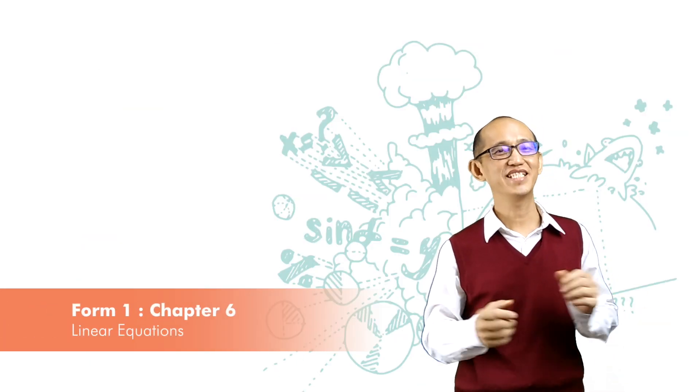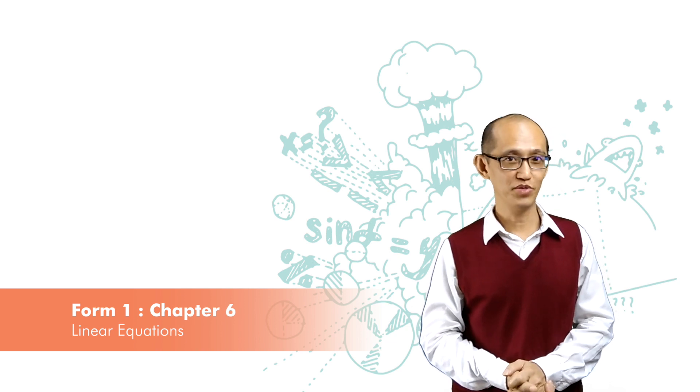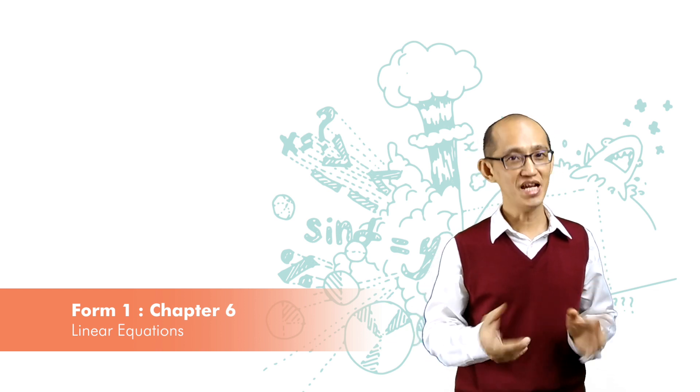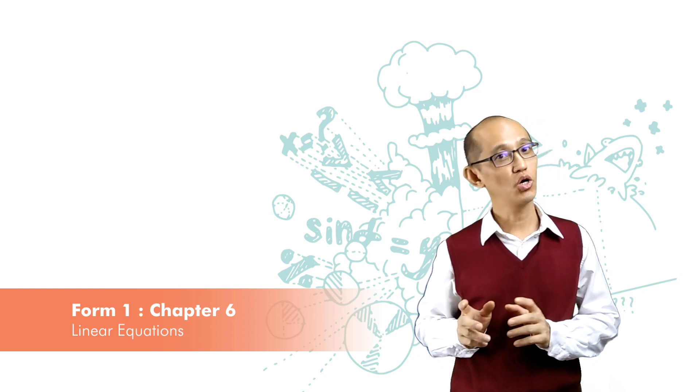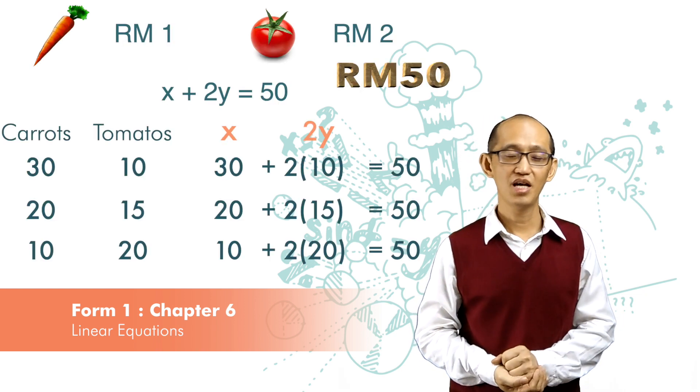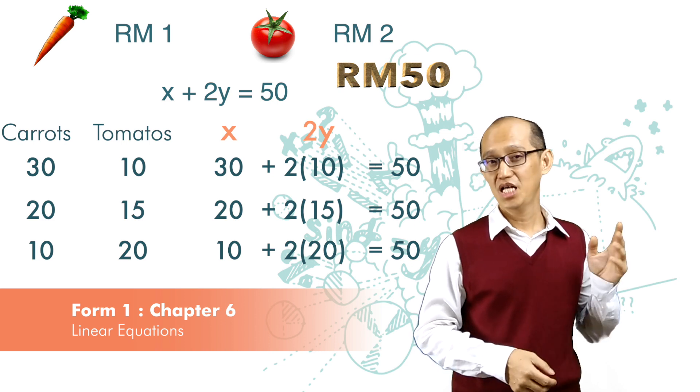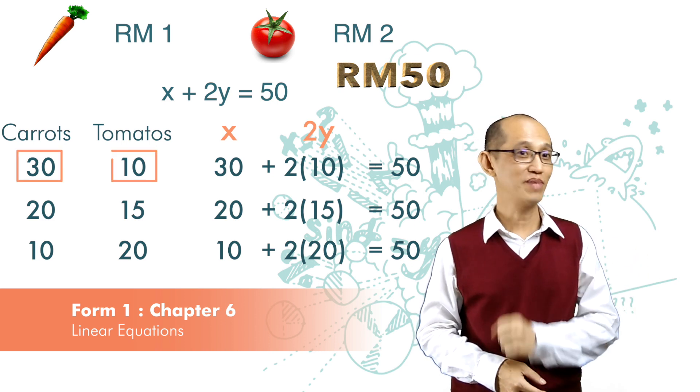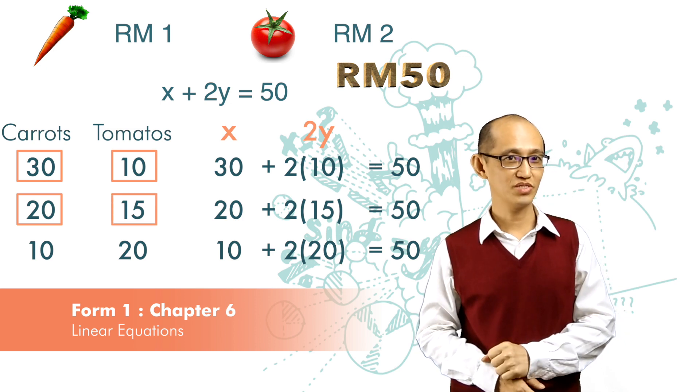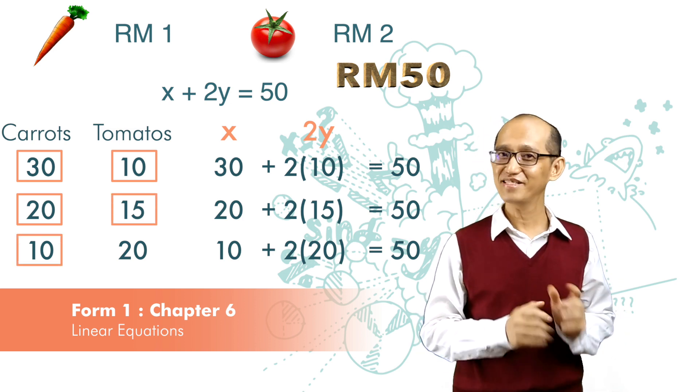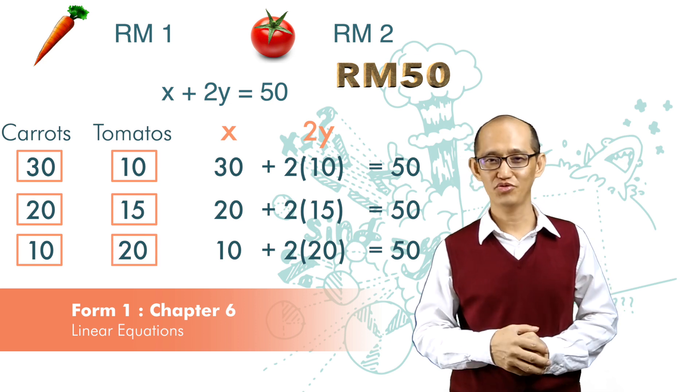Note that in linear equations in two variables, we can have many answers, different sets or pairs of answers. For example, 30 carrots and 10 tomatoes, or 20 carrots and 15 tomatoes, or 10 carrots and 20 tomatoes, and so on.